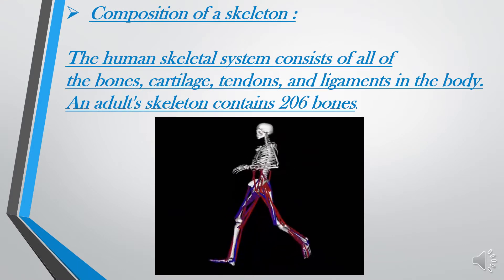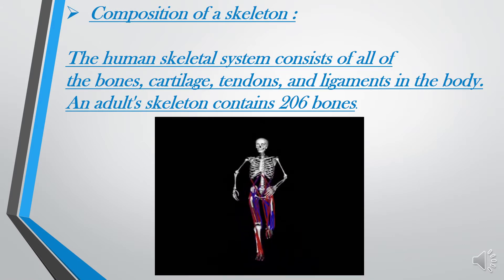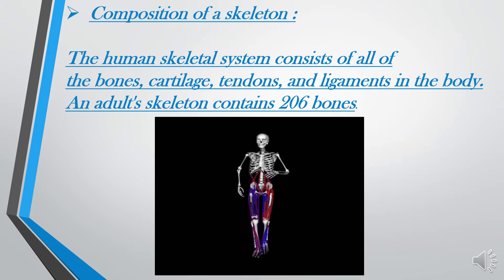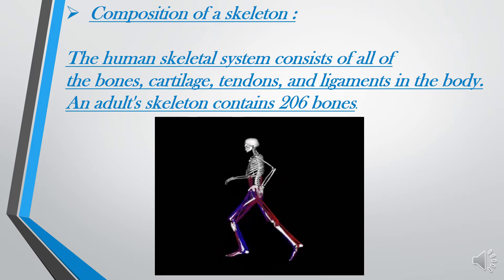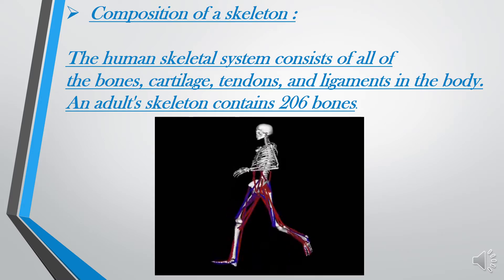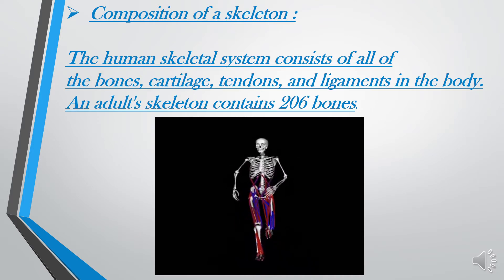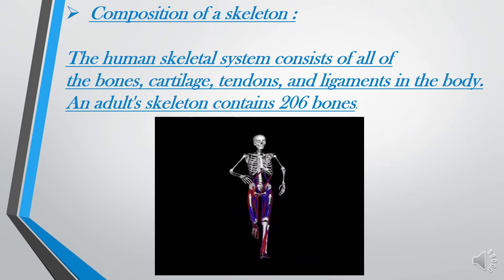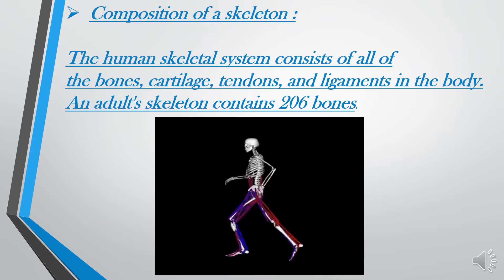Composition of a skeleton: the human skeletal system consists of all of the bones, cartilage, tendons, and ligaments in the body. An adult skeleton consists of 206 bones.